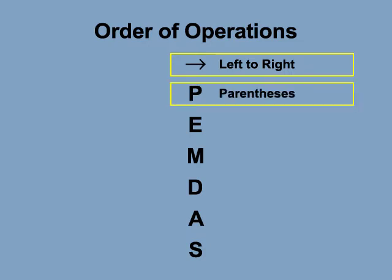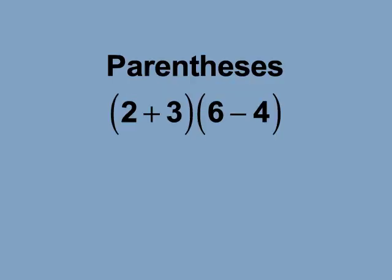The next rule is that any expressions in parentheses are simplified first. Look at this expression: the quantity 2 plus 3, times the quantity 6 minus 4.